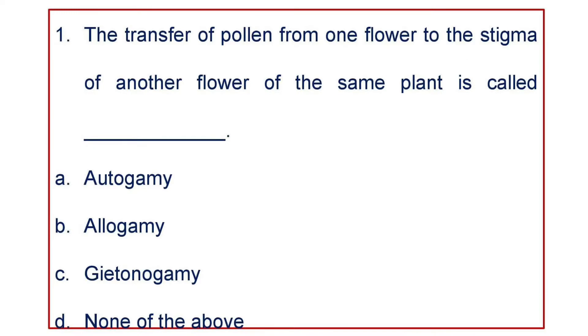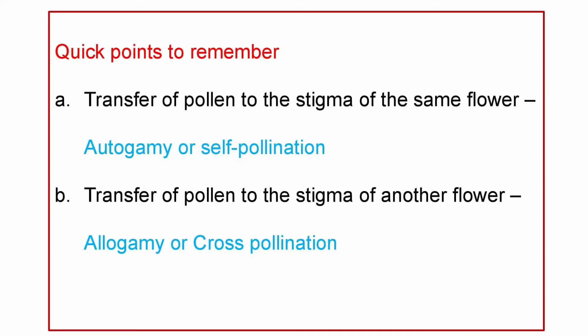First question: the transfer of pollen from one flower to the stigma of another flower of the same plant is called — A) Autogamy, B) Allogamy, C) Geitonogamy, or D) None of the above. The answer is Geitonogamy, and it is usually observed in maize. Quick points to remember: transfer of pollen to the stigma of the same flower is called Autogamy or Self-Pollination, while transfer to another flower is called Allogamy or Cross-Pollination.